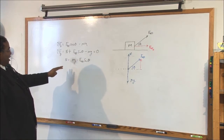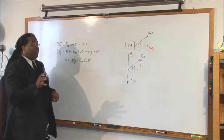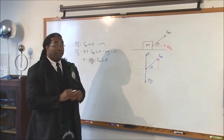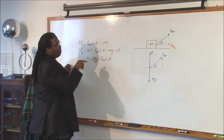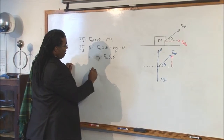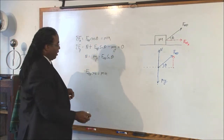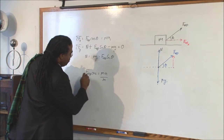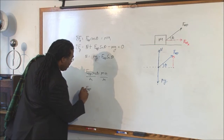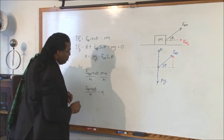Here's a secret: if your problem doesn't have friction, you're probably not even going to need the y component. Since we want to know the acceleration of the system, F applied cosine theta equals mass times acceleration — that's the equation of motion. Dividing both sides by m, F applied times cosine theta over m equals the acceleration.